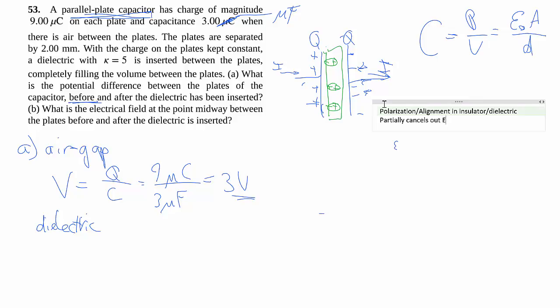It partially cancels out the electric field that are between the two plates. And if you decrease the electric field, remember how we have delta V equals E delta D? If E goes down, V also goes down, and that effectively makes your C go up.